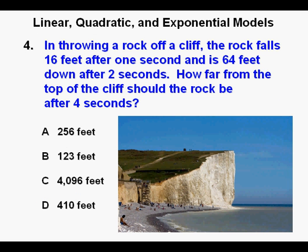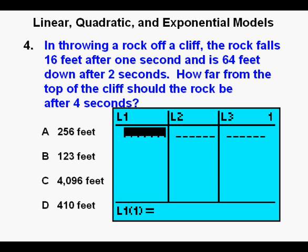Problem 4. In throwing a rock off a cliff, the rock falls 16 feet after 1 second and is 64 feet down after 2 seconds. How far from the top of the cliff should the rock be after 4 seconds?